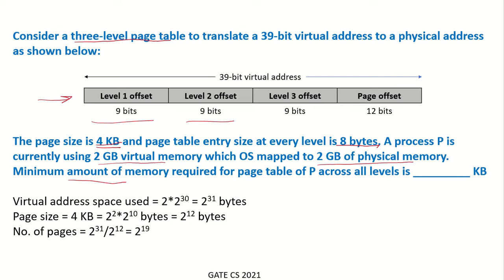We have been given that currently the virtual space being used is 2GB. Converting it into bytes: 2 × 2^30, which gives us 2^31 bytes.